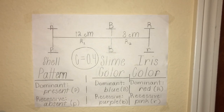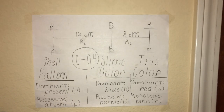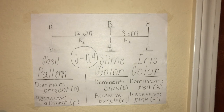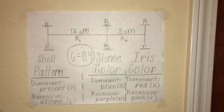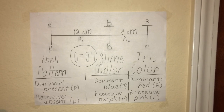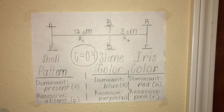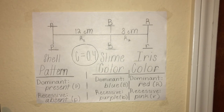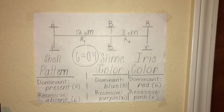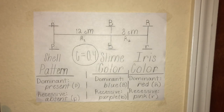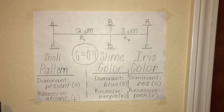From this data we can see our R1 value of 0.12, which equals 12 centimorgans, and our R2 value of 0.08, or 8 centimorgans. We can also see our coefficient of confidence C equals 0.4.